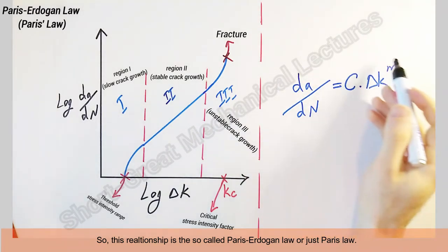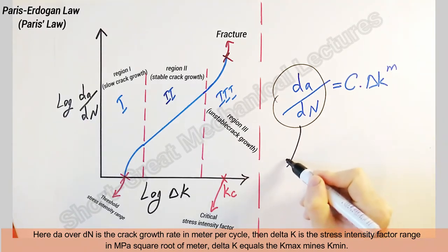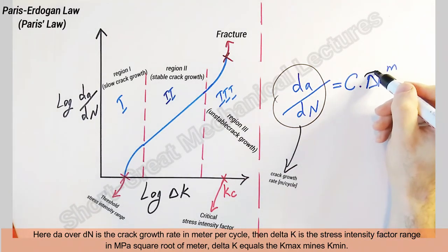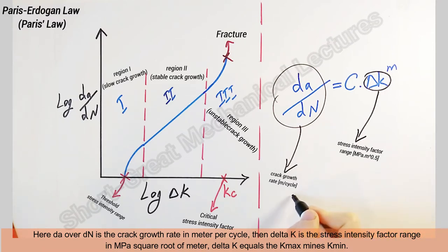Here, da/dN is the crack growth rate in meters per cycle. Then delta K is the stress intensity factor range in megapascal square root of meter. Delta K equals K maximum minus K minimum.